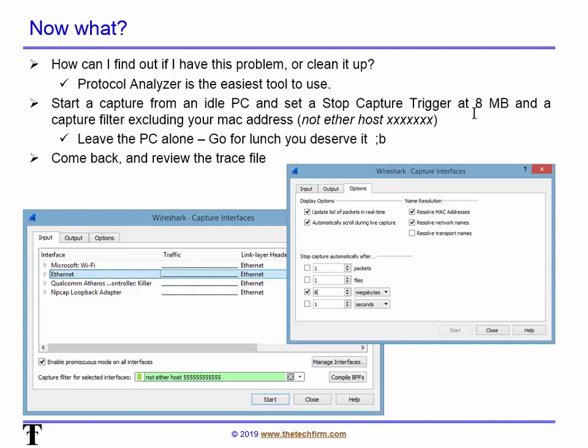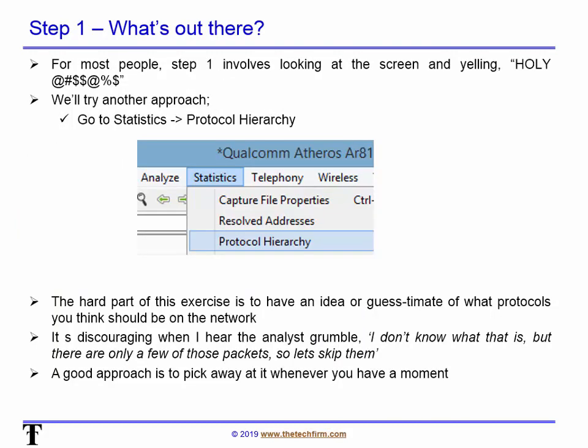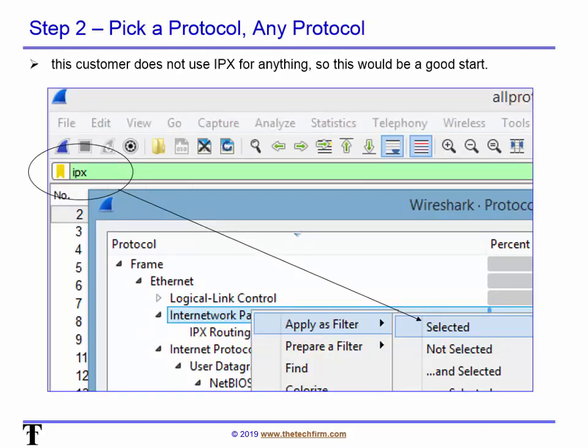Start your PC, leave it alone, go for lunch — whatever. In some cases that 8 MB will fill up in an hour, 10 minutes, or 3 seconds. It all depends on how much is floating around your network. Come back and review the trace file you just captured. You probably want to save the trace file as soon as you're done — don't start working on it in case something goes wrong. Save it as, say, 'broadcasts VLAN 1' or whatever you want to call it.